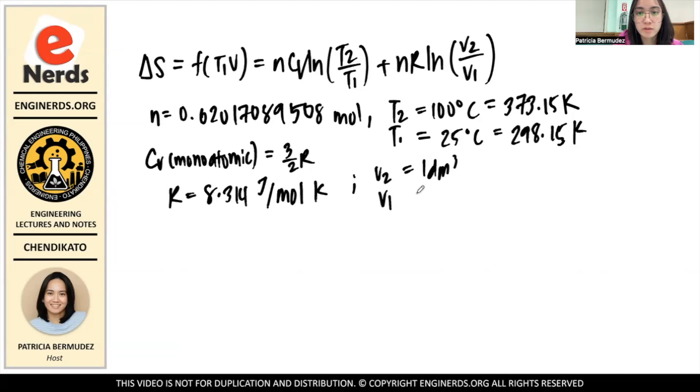And then we know that T1 equals 25 Celsius, and adding 273.15 to that it becomes 298.15 Kelvin. And then Cv - we know that argon is a monoatomic gas, right? So Cv for monoatomic is equals to 3/2·R. And our R is 8.314 joules per mole kelvin.